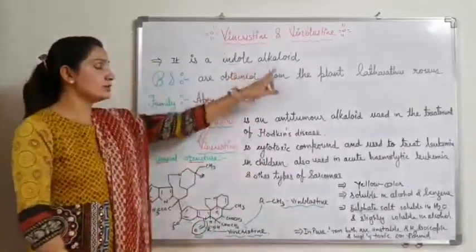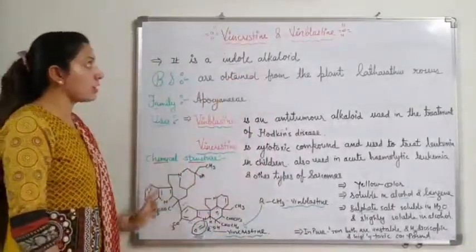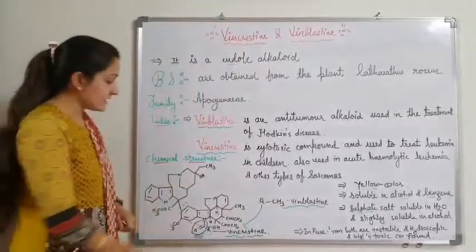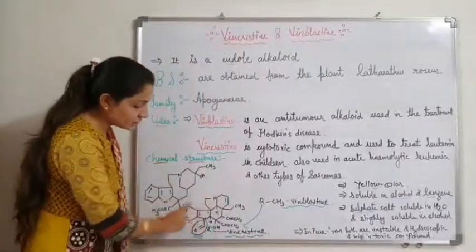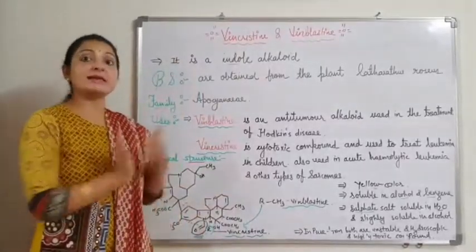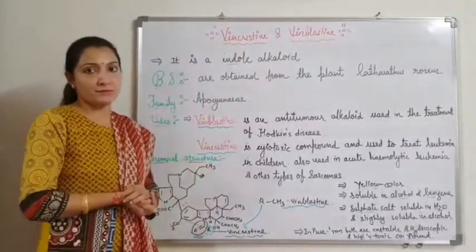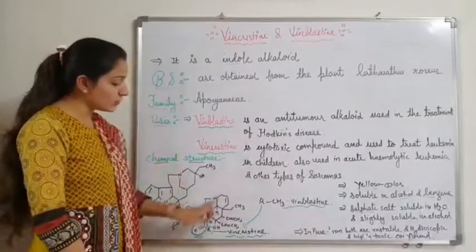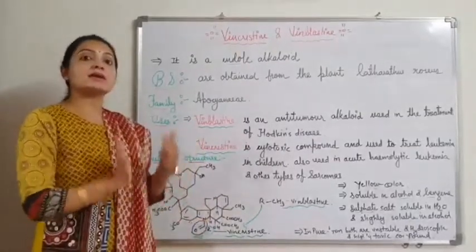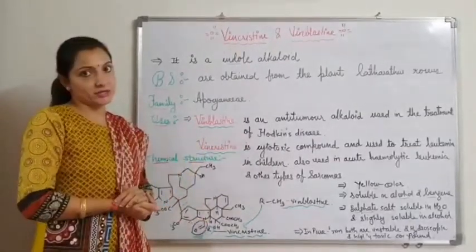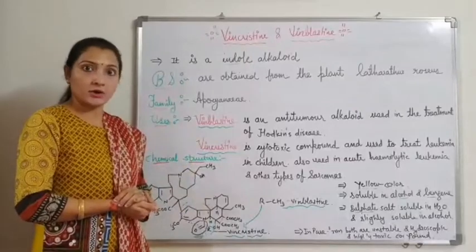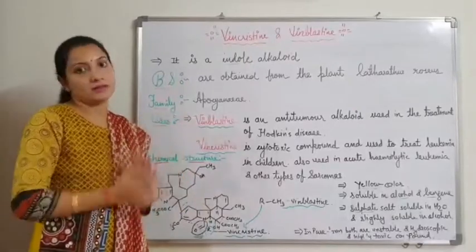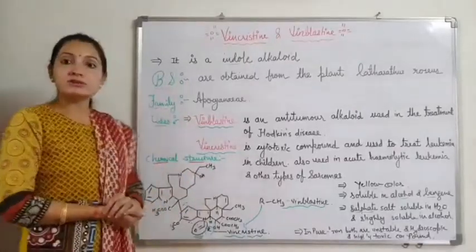This is the structure of Vincristine and Vinblastine, and this is the indole ring present in both compounds. Because of this indole ring, they come under the chemical classification of alkaloids — specifically, indole alkaloids.